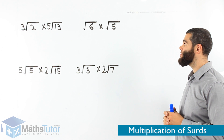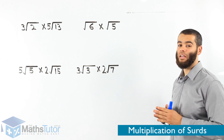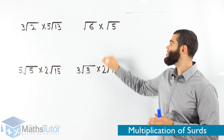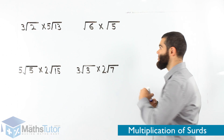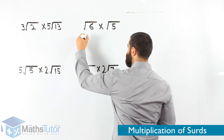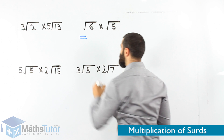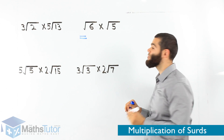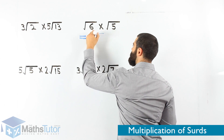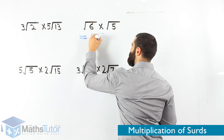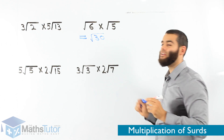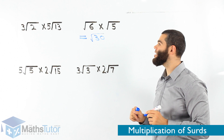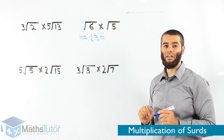These examples we can actually follow the same rules. Root 6 times root 5. 6 times 5 — root 30. Can we simplify? No, we can't. Root 30 is our final answer.